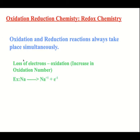So you can see here, this was an element by itself, which is zero naturally. And it went up to plus one because it lost an electron. Notice that when you lose electrons, the electrons are free on the product side, not the reactant side.